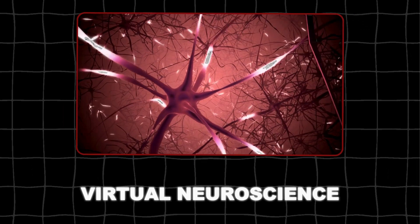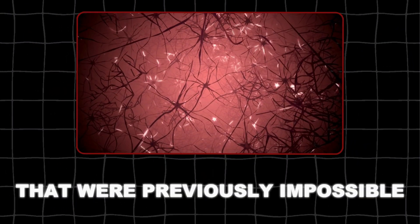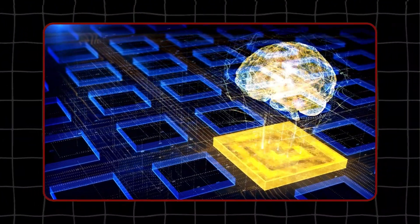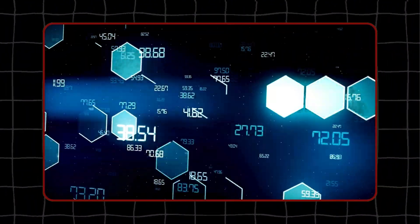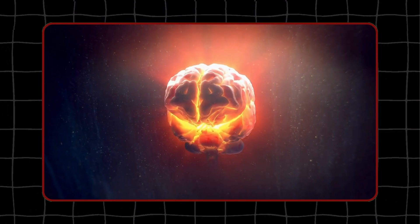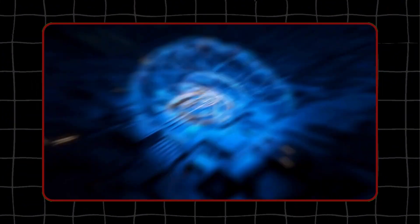Virtual neuroscience allows researchers to study brain function in ways that were previously impossible. Traditional methods of studying the brain often involve invasive techniques and are limited by ethical concerns. However, with a virtual brain, scientists can explore neural processes in a highly controlled and detailed manner, free from these limitations.